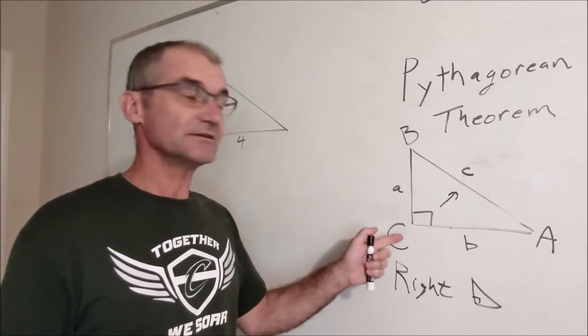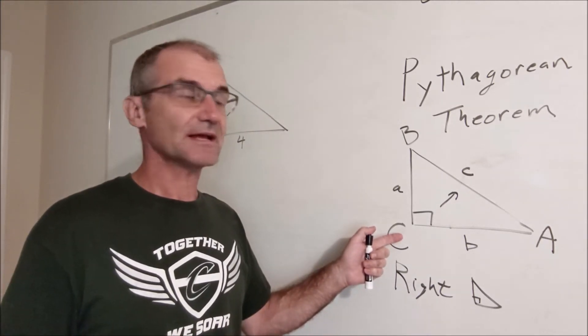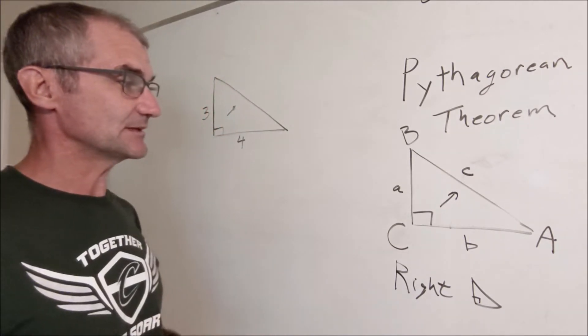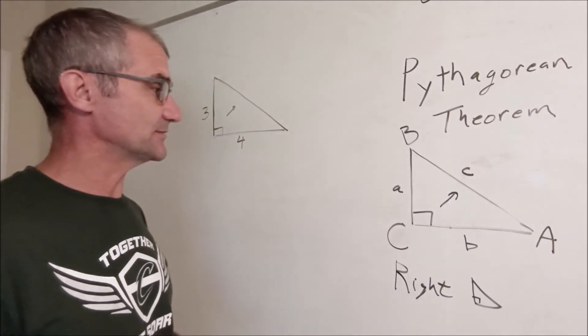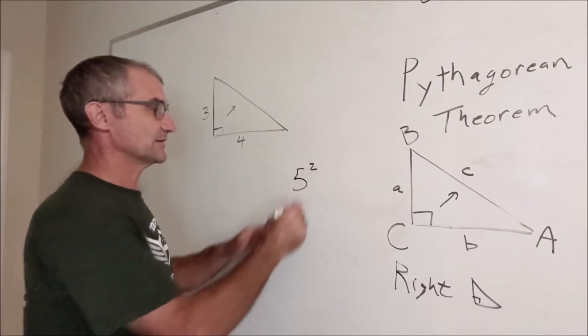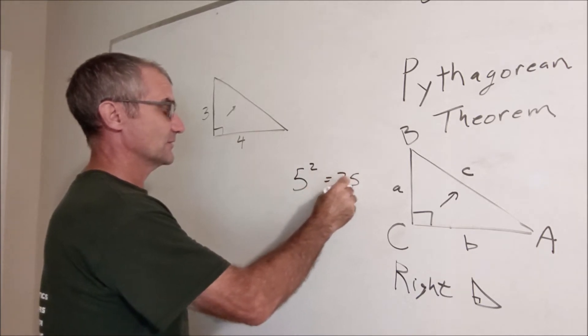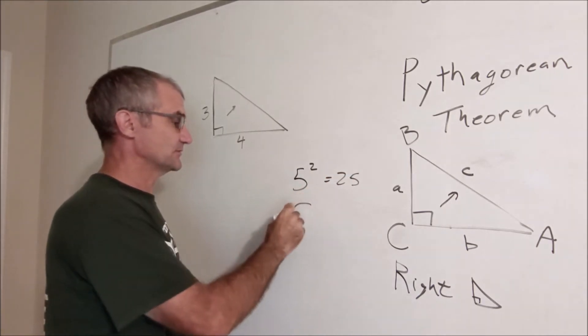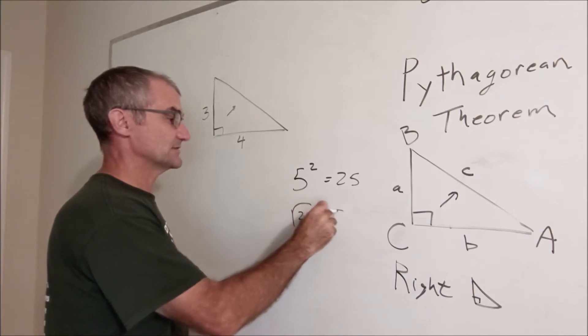Usually you use the letter C for the right angle but you don't have to. The last thing we need to know before we start the Pythagorean Theorem is square and square root. So 5 squared means 5 times 5 is 25, or the reverse operation of that is the square root. Square root of 25 is equal to 5.